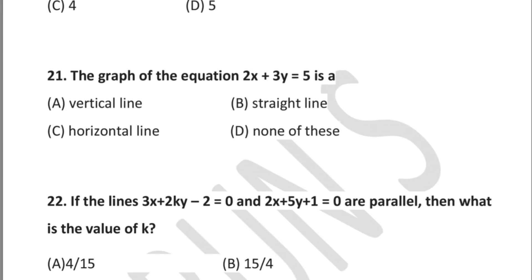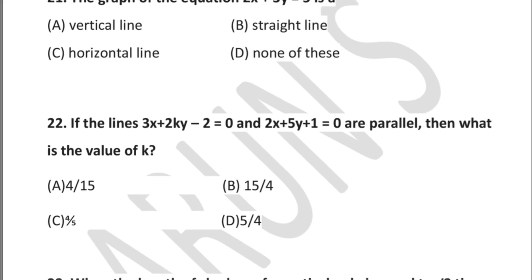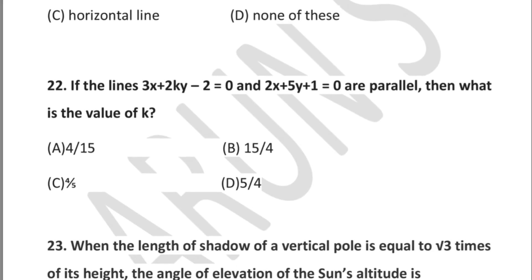Question 22: if the lines 3x + 2ky − 2 = 0 and 2x + 5y + 1 = 0 are parallel, then the value of k is — option A: 4/15, option B: 15/14, option C: 4/5, option D: 5/4.